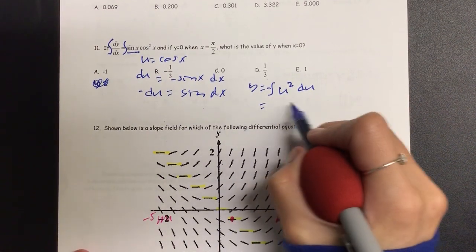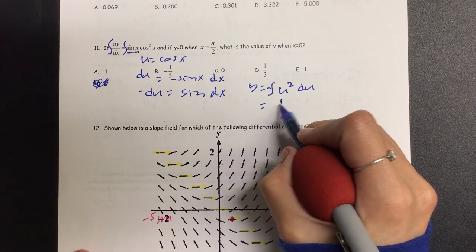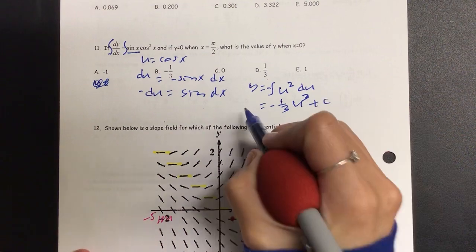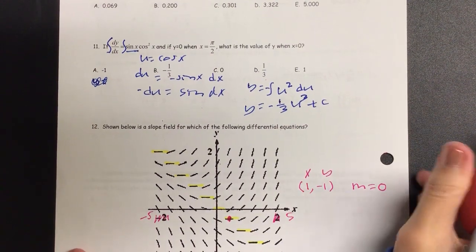So when I add one, we get one third, negative specifically, u to the three plus c, and we can find the c value.